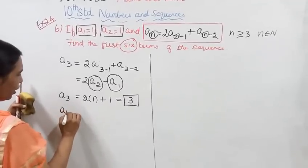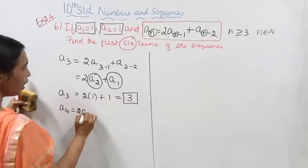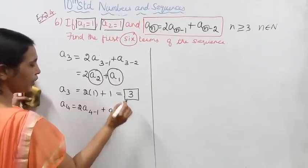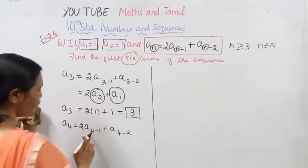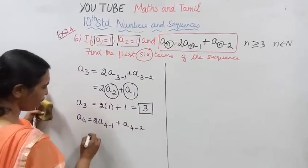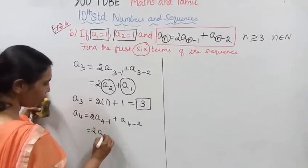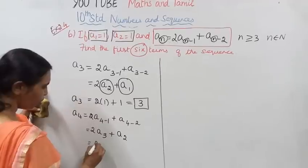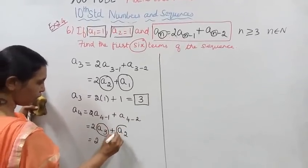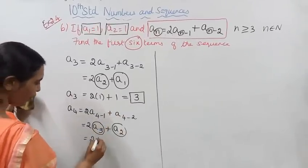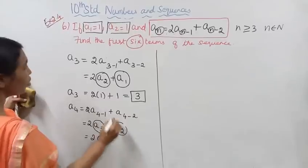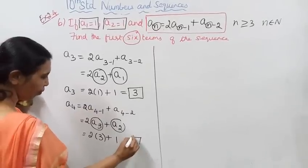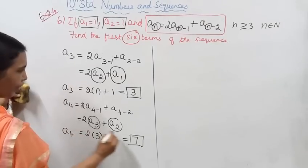A4 equals 2·A(4-1) plus A(4-2), that is 2·A3 plus A2. Substituting: A3 value is 3, 2 into 3 is 6, plus A2 value which is 1. So 6 plus 1 equals 7. A4 value is 7.